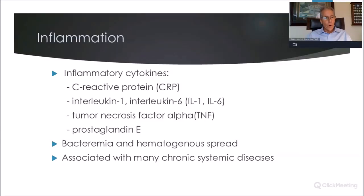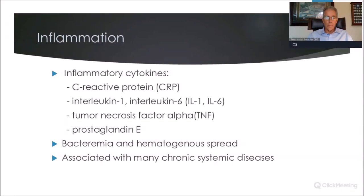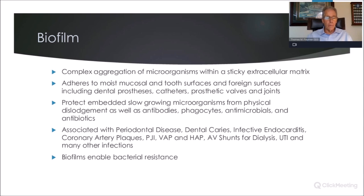We should be aware of the key inflammatory cytokines: C-reactive protein, interleukins 1 and 6, tumor necrosis factor alpha, and prostaglandin E are the big ones. They are associated with general inflammation but also with periodontal disease specifically. And we know again that hematogenous spread from the gingival sulcus into the bloodstream can be associated with many chronic systemic diseases.